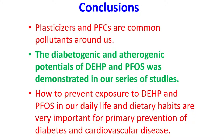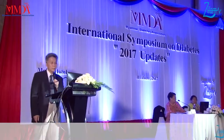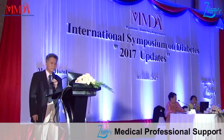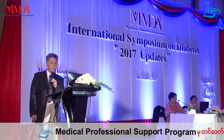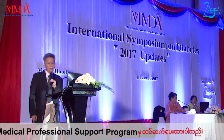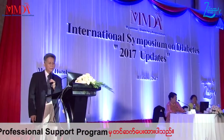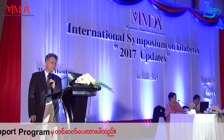In conclusion: plasticizers and PFCS are common pollutants around us. The diabetogenic and estrogenic potential of DHP and PFOS was demonstrated in our series of studies. Preventing exposure to DHP and PFOS in our daily life and dietary habits is very important for the primary prevention of diabetes and cardiovascular disease.